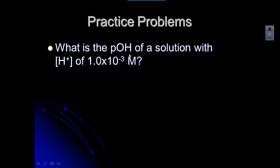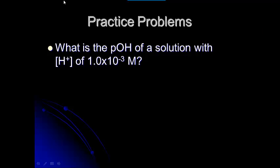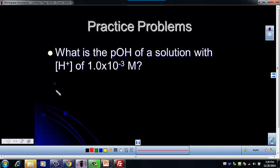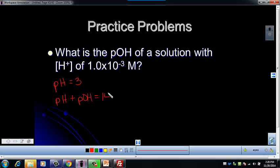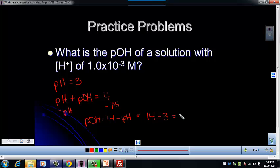In this problem, we are being given the same hydrogen ion concentration and asked to find the pOH of that solution. We know the pH is 3 from the earlier problem. We can use the relationship pH plus pOH equals 14. If we subtract pH from both sides, pOH equals 14 minus pH, which is 14 minus 3, which would be 11. pH does not have a unit — this is the only number you will not have to have a unit for when solving these problems.